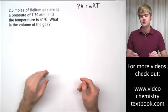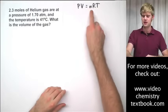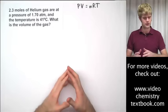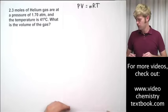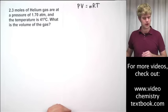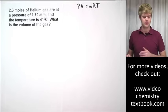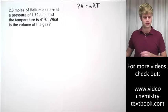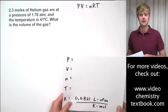All right. Let's do some practice problems with the ideal gas law, PV equals nRT. Here's our first one. 2.3 moles of helium gas are at a pressure of 1.7 atm and the temperature is 41 degrees Celsius. What is the volume of the gas?